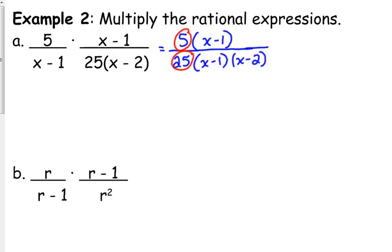First of all, 5 over 25, that reduces. That leaves us with 5 in the denominator. We have x minus 1 on the top and on the bottom, so we don't have anything in the numerator, except really there is a 1 there, because canceling terms really means that there's a 1 in its place. And then we're left with x minus 2 in the bottom. And that is our final answer. That is as simple as it will go.